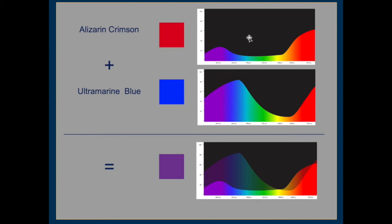Wherever there's black in one profile, it cancels the corresponding area in the other. The two black areas cancel each other — which is why this is called subtractive color mixing. This color takes out a bunch of light, and that color takes out a bunch of light. Put them together, and even more light is removed, so you're adding these absences of light together.